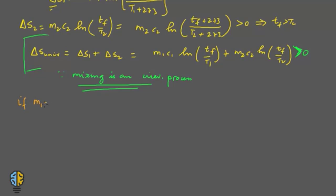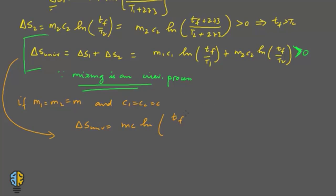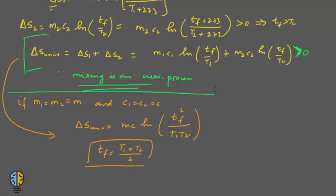Now let's take a special case: if the mass values are the same (m1 = m2 = m) and both fluids are also the same (c1 = c2 = c), then ΔS_universe = m·c·ln(Tf² / (t1·t2)), and the value of Tf simplifies to (t1 + t2) / 2.